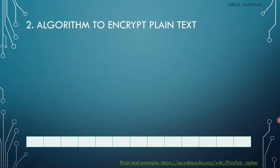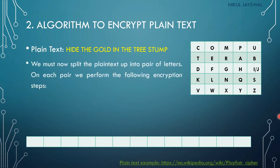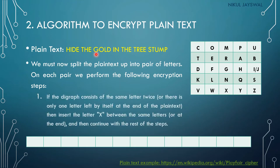The second step is to encrypt the plain text. Our example plain text is 'hide the gold in the tree stump.' We must split the plain text into pairs of letters, and on each pair we perform the following encryption steps. There are four major rules to apply.